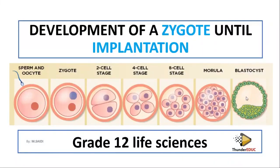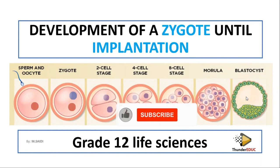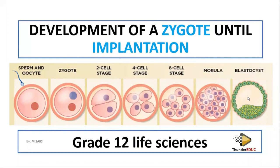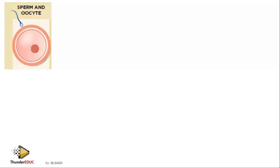Welcome back to our class — don't forget to subscribe if it is your first time visiting our channel. Another disturbing question to students in Paper One of Life Science: the development of the zygote until implantation. Students really struggle with this question, but before this video ends you'll be able to write what is needed in the paper and score all the marks. Let's get started.